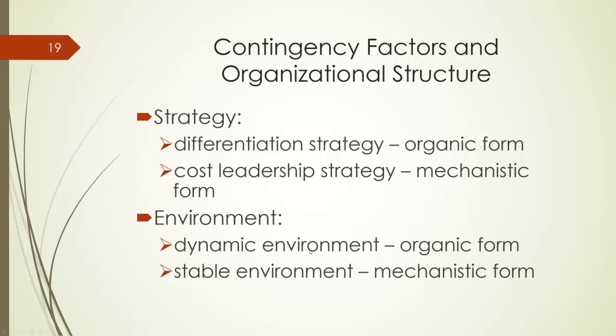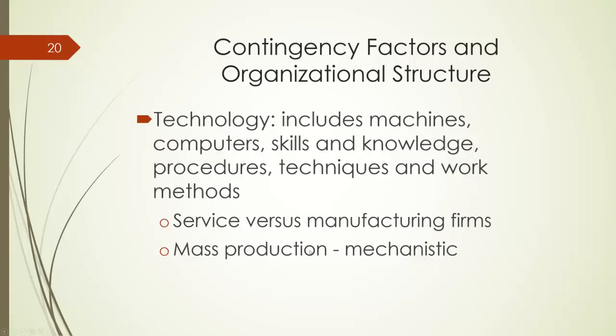An organization operates in a dynamic or a stable environment. A firm that operates in a dynamic or fast-changing environment needs the flexibility of an organic design. In a stable environment, a firm would have a more mechanistic form. Another contingency factor is technology, a term that includes computers, machines, knowledge or skills, and work methods. Service firms and manufacturing firms would employ different sets of technologies, and different technologies are associated with certain organizational forms. For example, a mass production firm would have work activities that are standardized with a wider span of control and centralized decision making, and therefore the overall structure is mechanistic form.